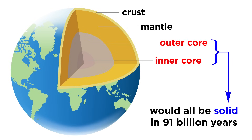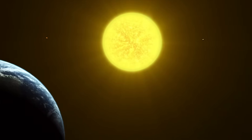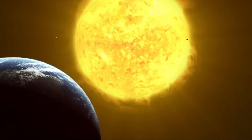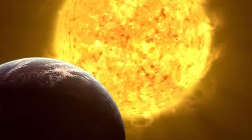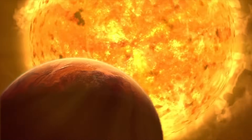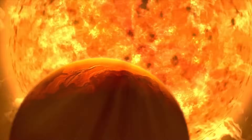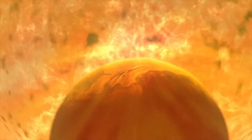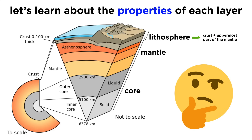If Earth were to exist in 91 billion years, it would have an entirely solid iron core, and Earth's magnetic field would be gone. However, it's likely that the Sun will engulf the Earth in a red giant phase long before then — a poetic end to our hero's journey, and an amazing sight for any sentient beings able to escape by venturing into the cosmos. With this overview of Earth's structure complete, let's go into more detail about the physical properties of each of Earth's layers, and how geologists can detect those properties with seismic waves.